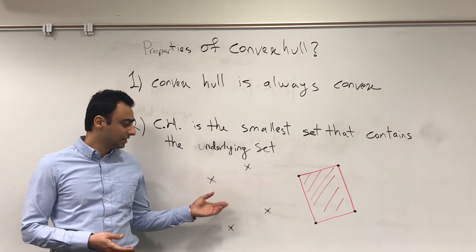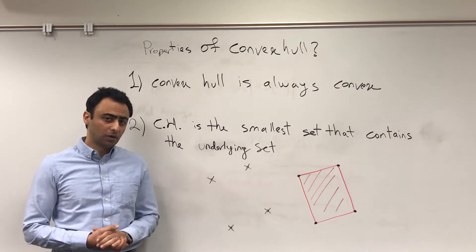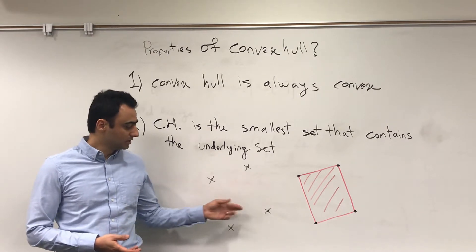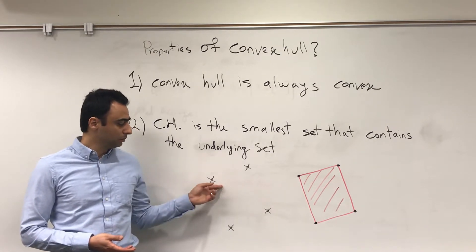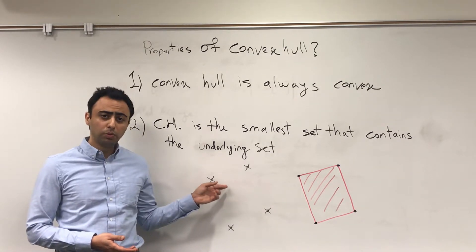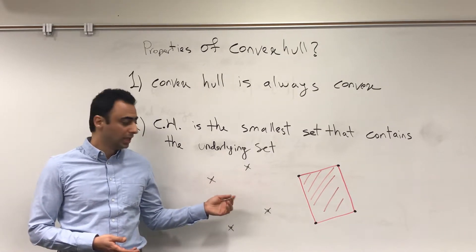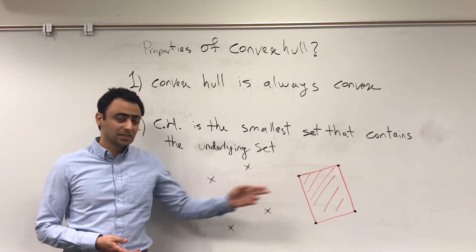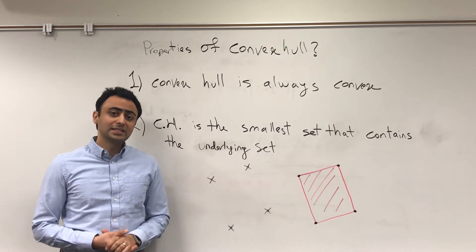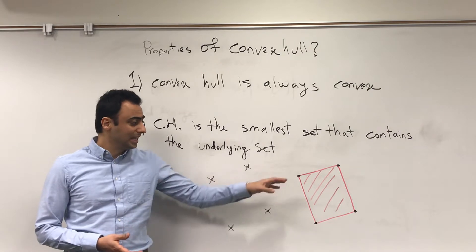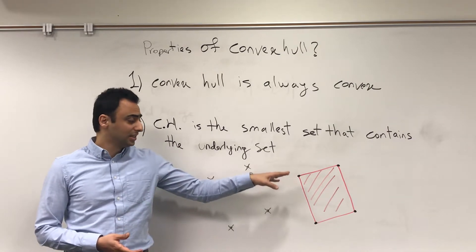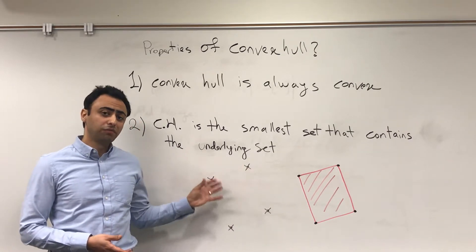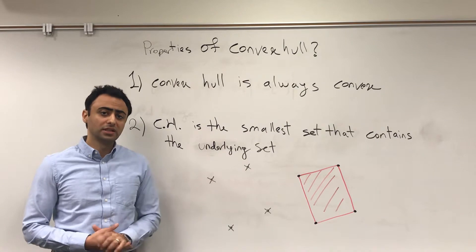For example, this set with four points in R² is not a convex set because the line segment between two points is not contained in the set. But the convex hull of this set is a convex set and it is the smallest convex set that contains these four points in R².